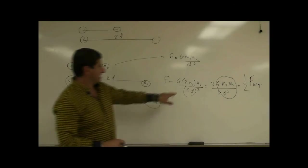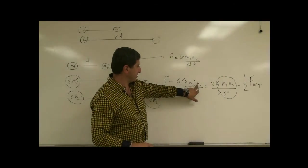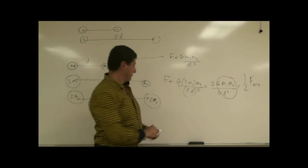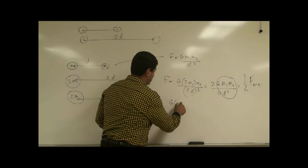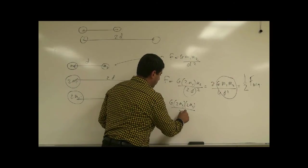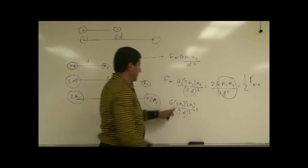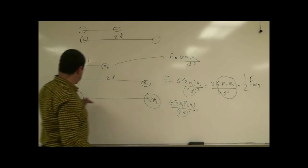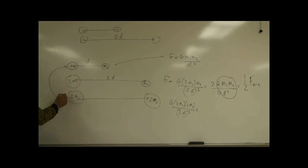Well, what's going to happen here? You have 2 here. You have another 2 here. Then you have 2 squared, which is a 4. The force will be the same. G 2M1, 2M2 over 2D quantity squared. 4 over 4 cancels. The force here is the same as the force here.